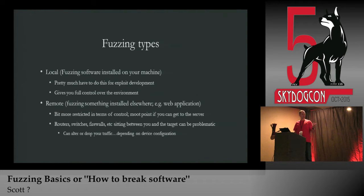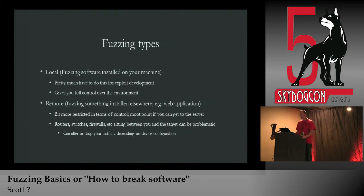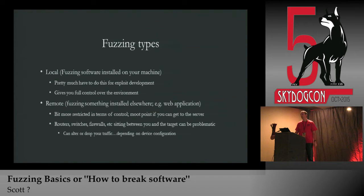Types of fuzzing — local and remote are the ones I deal with most. Local means you've got the fuzzing software and your target installed on the same machine. As far as I can tell, you have to do this for exploit development because you need to run a debugger to see what's going on behind the scenes when you get a crash. Remote fuzzing is for something installed elsewhere, like a web application or FTP software — it's a bit more restricted in terms of control, but that's moot if you can get to the server.